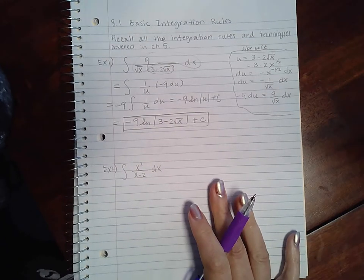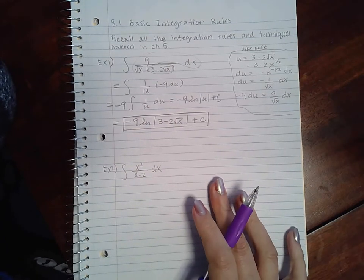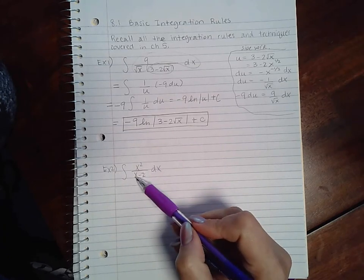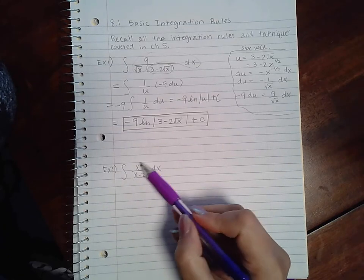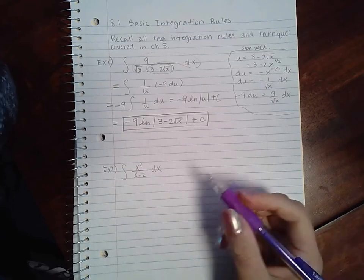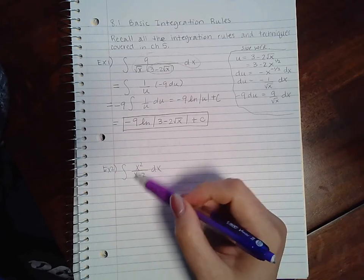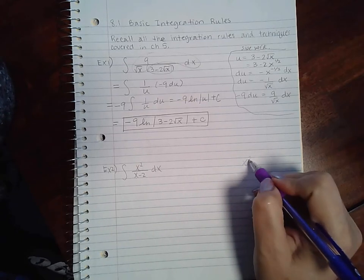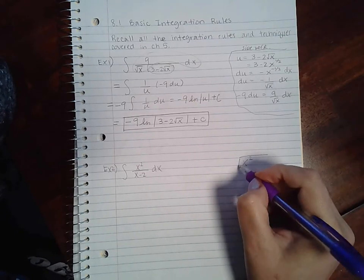Now for our second example, u-sub doesn't really help here because the derivative of x is 1, but then that doesn't help me with the x squared. Normally, when you have functions where the degree is higher in the numerator, you have to perform long division to continue the problem out.